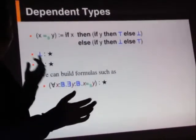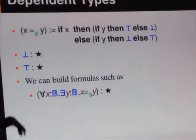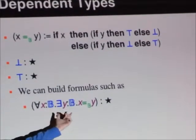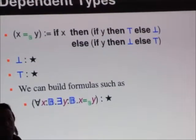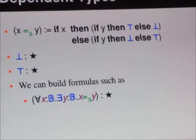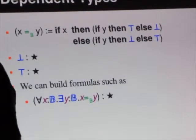All right. So now it's all legit. And now we can write, create the formulas like for all x, there exists y such that x is equal to y. It's a potential formula that is legitimate.